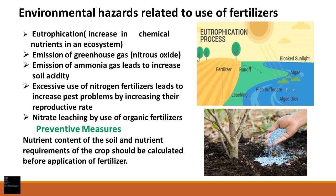There is also emission of greenhouse gases — specifically nitrous oxide. Greenhouse gases accumulate above the Earth, trap heat, and increase overall temperature, contributing to global warming. Additionally, emission of ammonia gas from inorganic fertilizers can increase soil acidity. Since pH level is very important for plant growth, increased soil acidity negatively affects plant growth. Excessive nitrogen fertilizer can also lead to pest problems by increasing their reproductive rate.